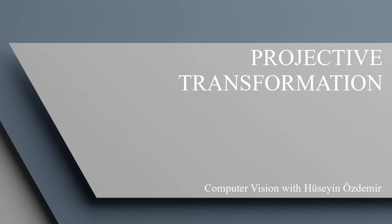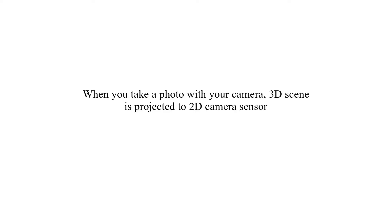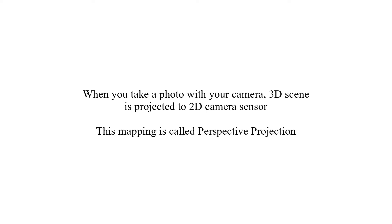Hi, in this video I will talk about Projective Transformation. When you take a photo with your camera, a 3D scene is projected to a 2D camera sensor. This mapping is called Perspective Projection.